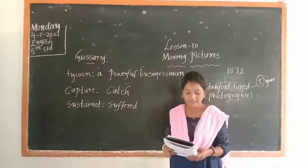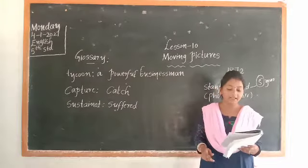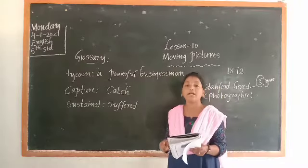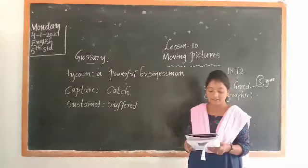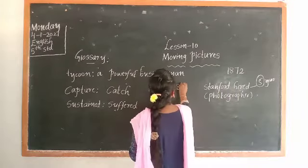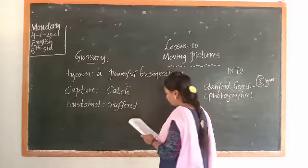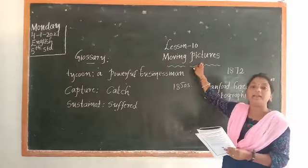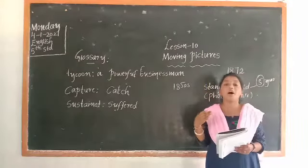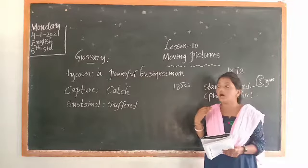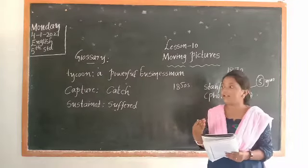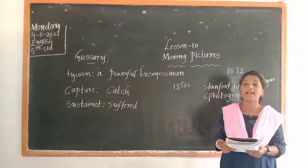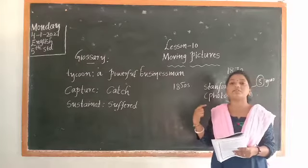Muybridge was an eccentric — he had a serious accident and then he emerged in America. It was the 1850s. After being tried, the moving pictures story continued. In that story, the question was about the horse and how it moves.